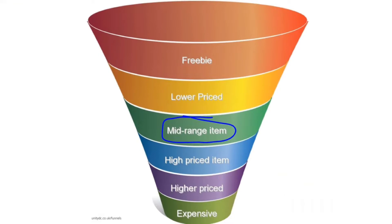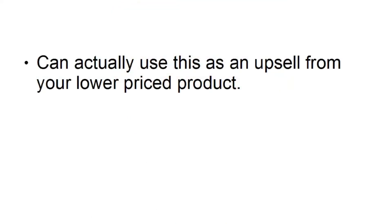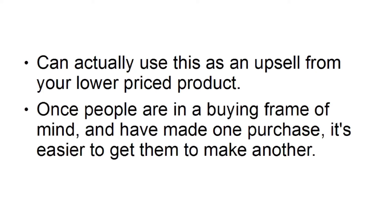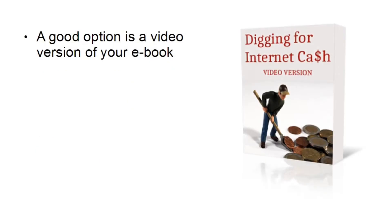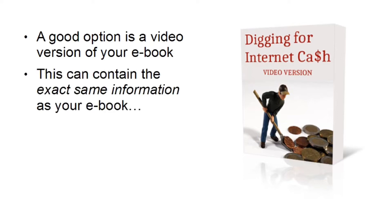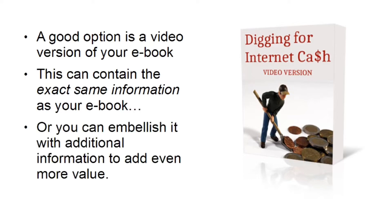The next step is your mid-range item — slightly more expensive than your lower-priced item. You can use this as an upsell from your lower-priced product, since once people are in a buying frame of mind and have made one purchase, it's easier to get them to make another. A good option is a video version of your ebook — it can contain the exact same information in video form, or you can embellish it with additional information to add even more value.